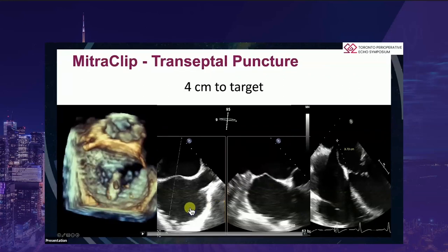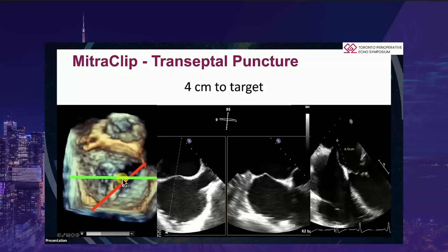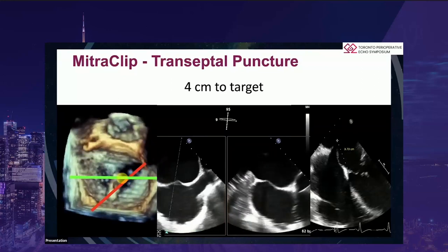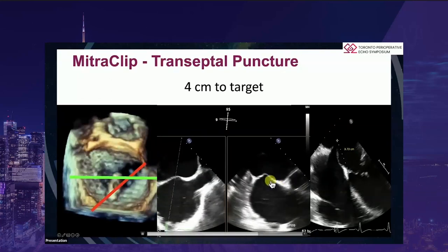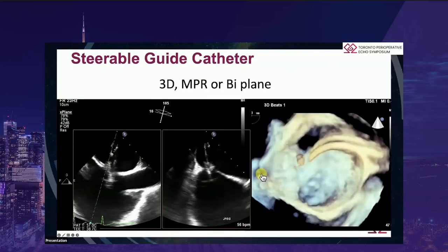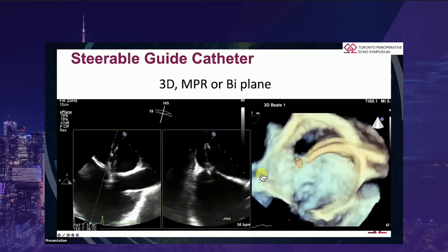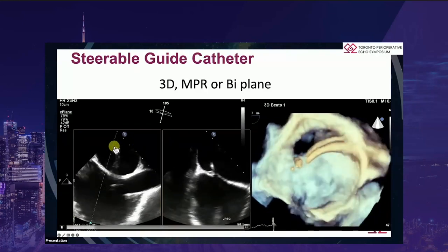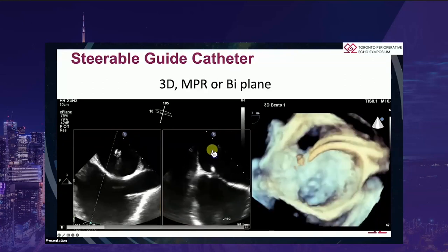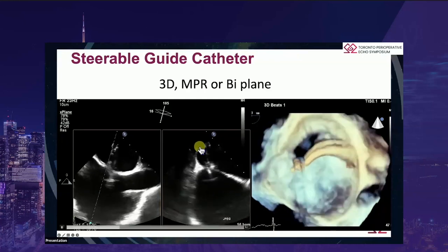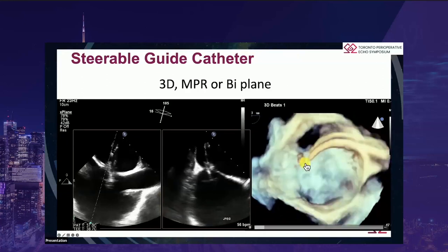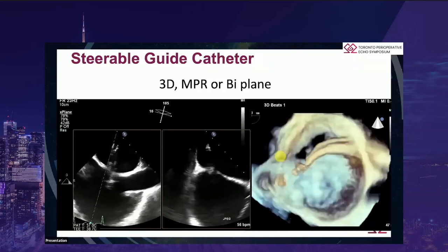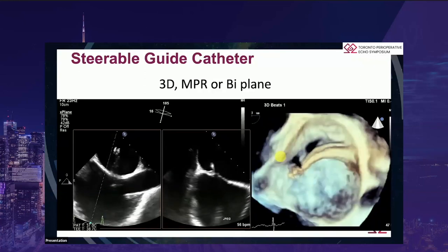For transseptal puncture, depending on your location target, you may want to change where you puncture. For the vast majority of patients, we're aiming for mid-fossa, posterior to mid-inferior and posterior — the aortic valve is your anterior structure, so move posteriorly. When advancing the steerable guide catheter, I encourage you to use 3D MPR or at a minimum biplane. With just a 2D image, you're unaware of associated structures. Adding the orthogonal biplane lets you see if the catheter is directed towards the left atrial wall, or simply use 3D where you have good spatial awareness.